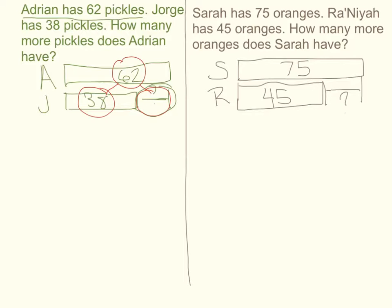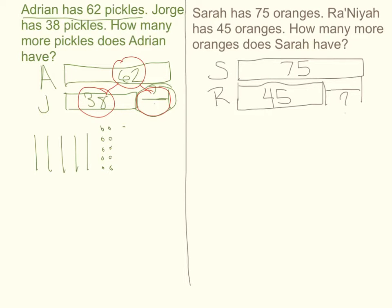I'm going to draw my tens and ones. Since in 62 I won't have enough ones to take 8 from, one of my tens is going to be shown in groups of 5. I'll draw 6 tens, and then break one into dots — making a group of 10 ones. So now I have 6 tens: 10, 20, 30, 40, 50, 60, and I still need 2 more ones — 61, 62.